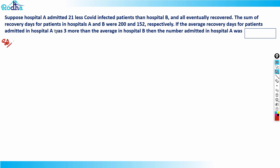Let's frame an equation. In hospital A, let the number of COVID patients be A. It says hospital A admitted 21 less than hospital B, so the number of COVID patients in hospital B will be A plus 21.